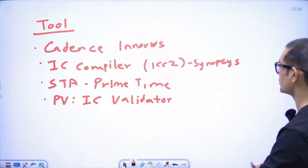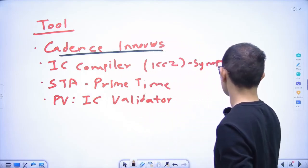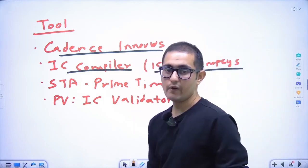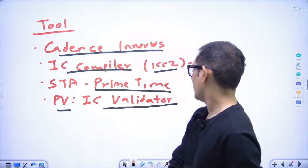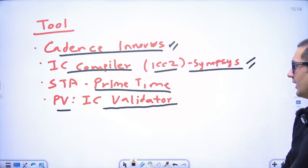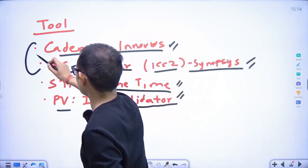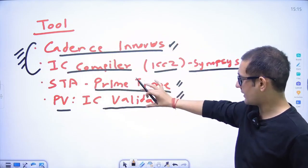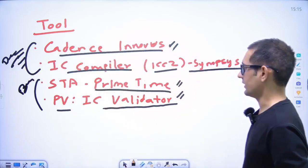Now about the tools. In Cadence we have the Innovus tool. In Synopsys we have the ICC Compiler, also called ICC2. For STA we have PrimeTime, and for physical verification we have IC Validator. At least you should know Innovus or ICC2 in detail, and the basics of PrimeTime and IC Validator. In detail you should know the first two tools, and basically you should know the other two.